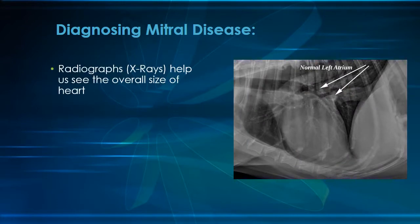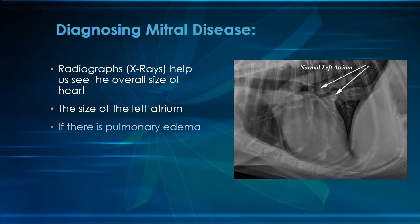Once we hear a murmur, the next step is to take radiographs of the chest. The radiographs allow us to see the overall shape and size of the heart. We can evaluate the size of the left atrium and examine the lungs for signs of congestion or pulmonary edema.